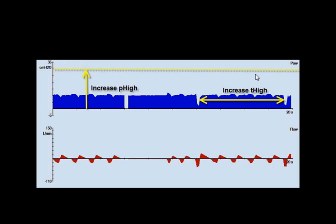Additionally, T-high can be lengthened. This increases gas mixing and recruits alveoli with longer time constants. You always want to assess hemodynamics if increasing P-high or T-high. If your patient has decreased cardiac output or hypotension, you can consider therapeutics which increase cardiac output and blood pressure, so you're not limited to increasing your P-high or your T-high.